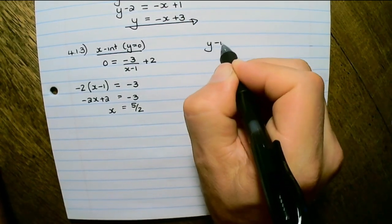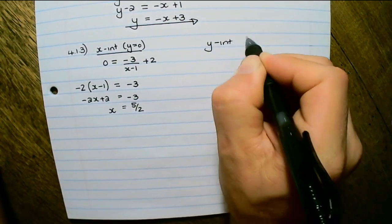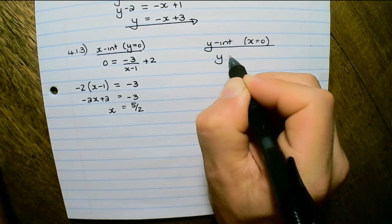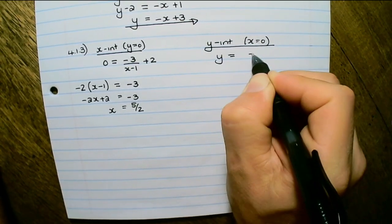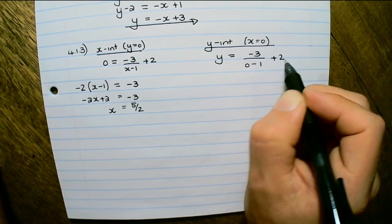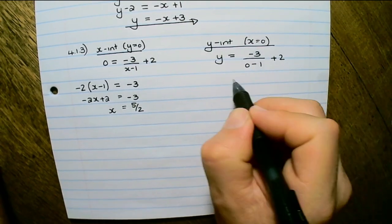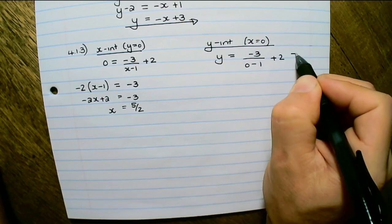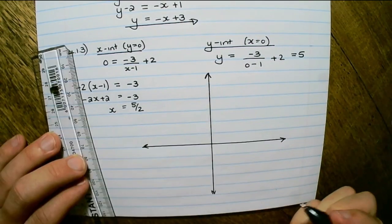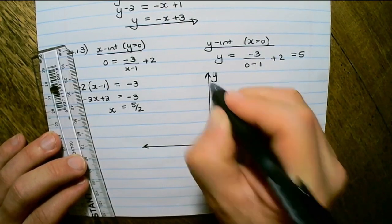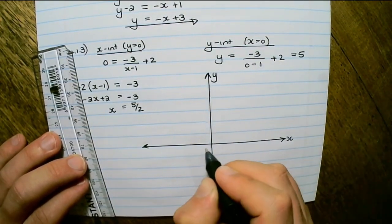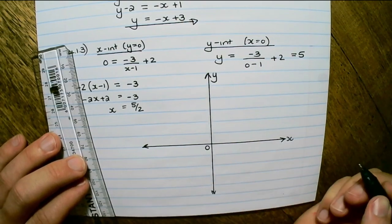The y-intercept is where x equals 0. So y equals negative 3 over 0 minus 1 plus 2, which is 3 plus 2, therefore the y-intercept equals 5. Make sure you label the y-axis and the x-axis, and it is good practice to label the origin.